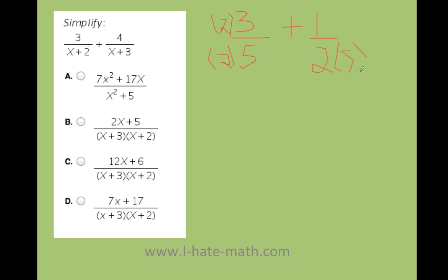And whatever I do to the bottom has to be done to the top. Basically what I'm doing is just rewriting each expression. I can do whatever I want as long as I do it to both sides. Think about it, 2 divided by 2 is just 1, so I'm basically just rewriting this. Once I have the same denominator, I can go ahead and just add.